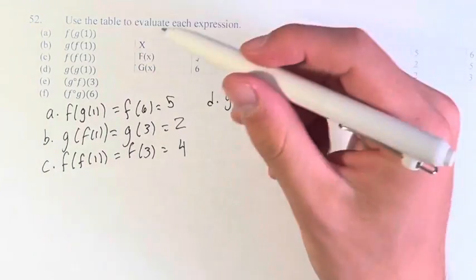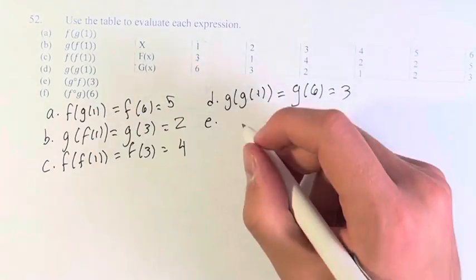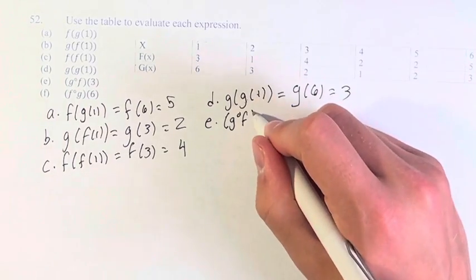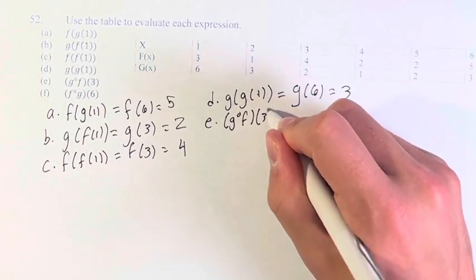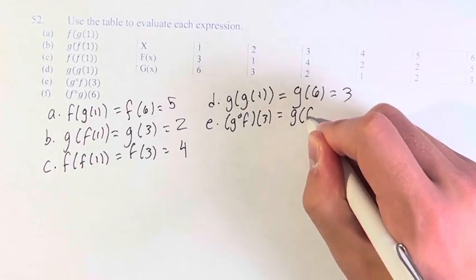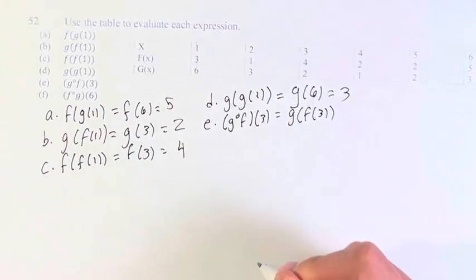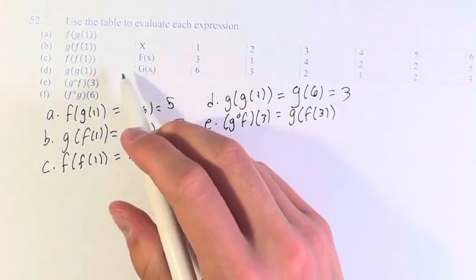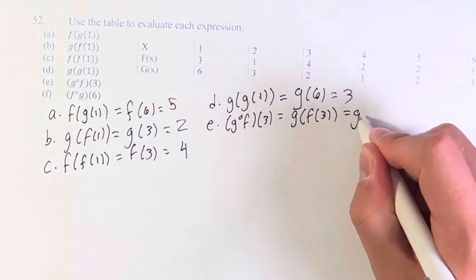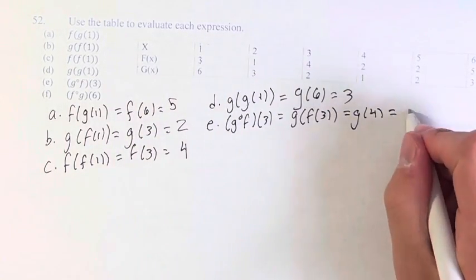Next, we have a slightly different notation — the composition g∘f of 3, which is just equal to g of f of 3. Looking here, f of 3 itself is 4, so this is g of 4. g of 4 is 1.